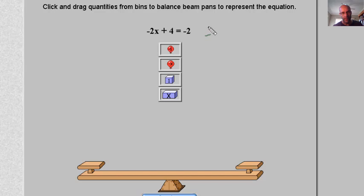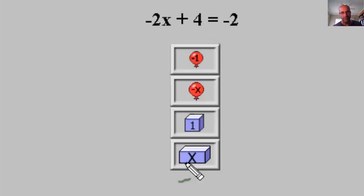Let's look at what we have here. We've got an equation given to us: negative 2x plus 4 equals negative 2. What we want to do is understand what that means, and in this video we're going to solve it.